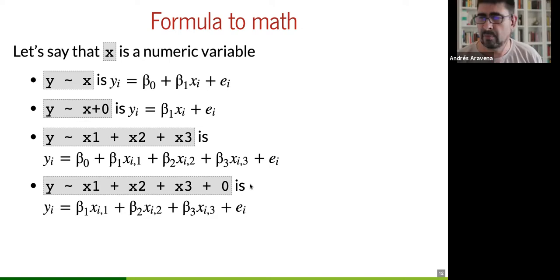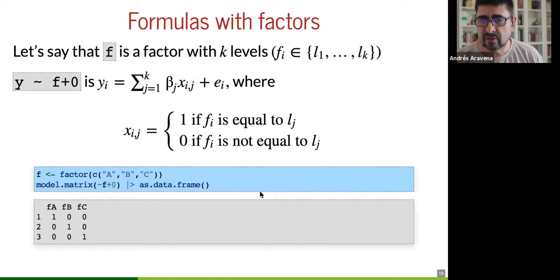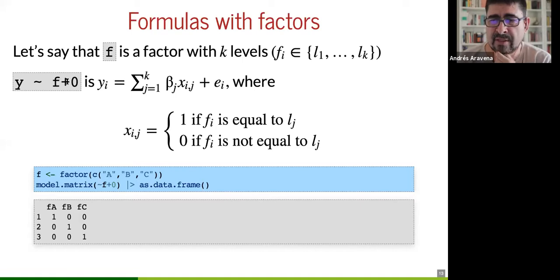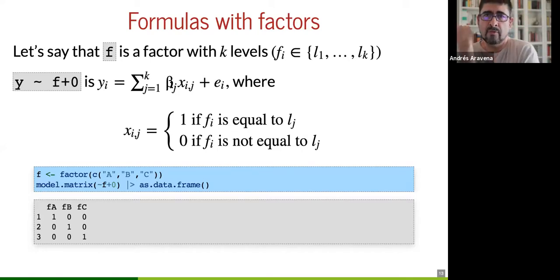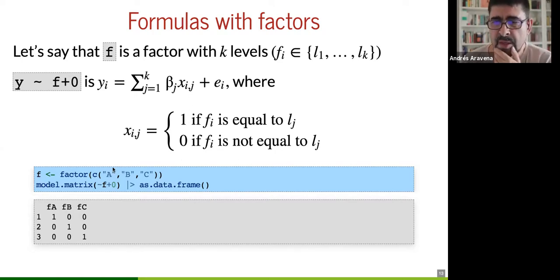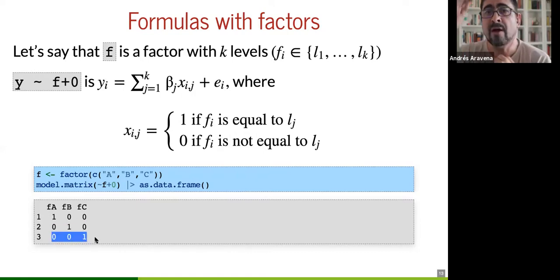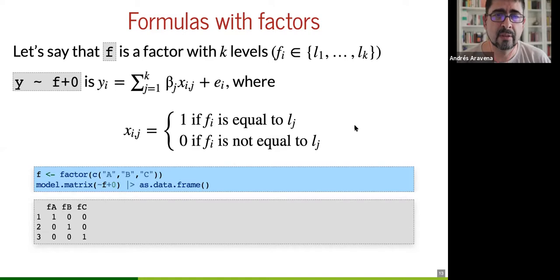If you have more than one independent variable — X1, X2, X3 — you will get beta_1, beta_2, beta_3. If you add zero, you don't have an intercept. With factors, you have a factor F with levels. If you run the formula F + 0 (no intercept), the formula means you have one beta for every condition, for every level, one through K. I have an example with factor ABC: you get a one for A when that individual has level A, a one for B when level B, and so on.